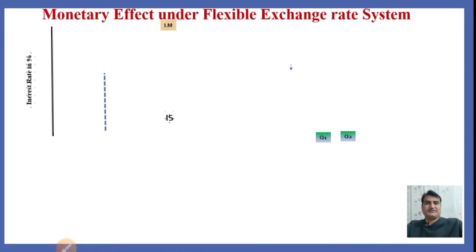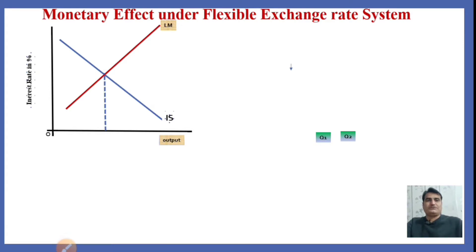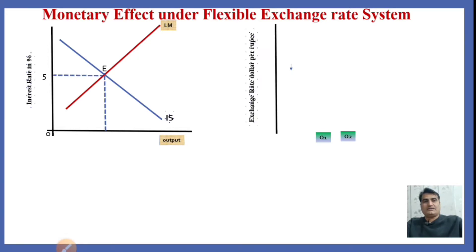The interest rate is measured on the y-axis, whereas output is measured on the x-axis. IS is the investment saving curve, which is a downward sloping curve because of the inverse relationship with the interest rate, and LM represents money supply, so that the goods market and money market are in equilibrium at point E, where the interest rate is 5%.